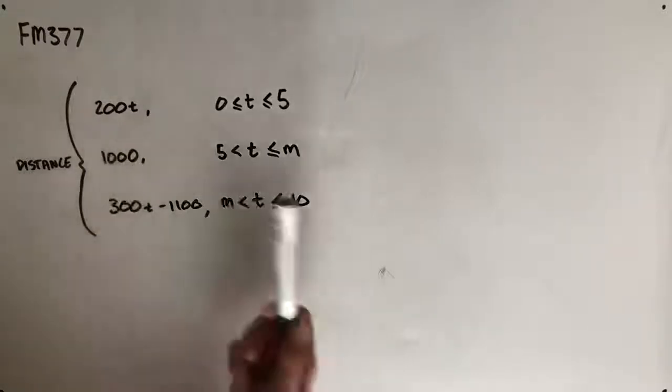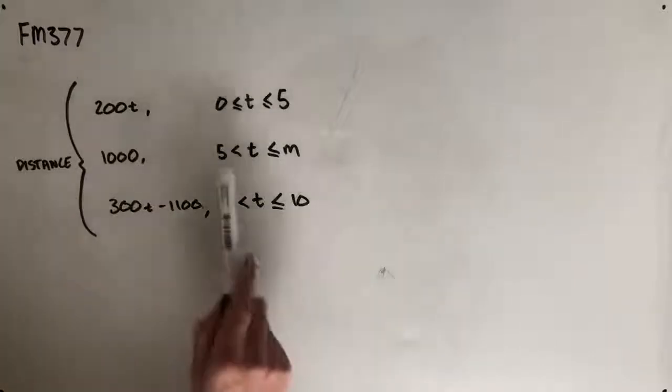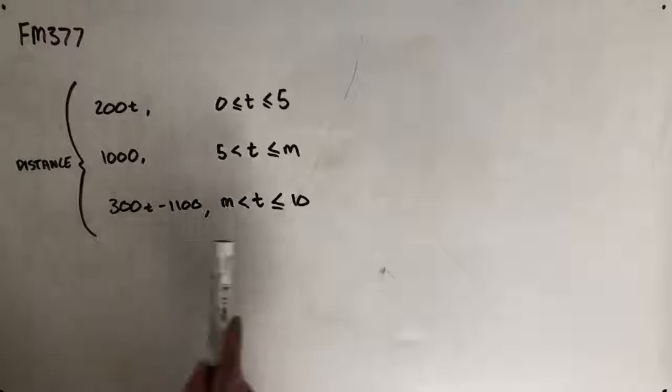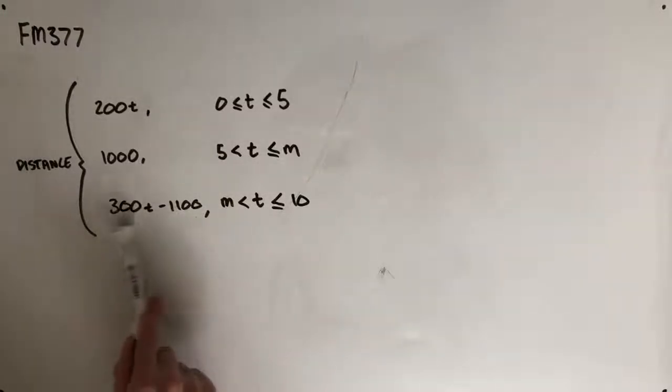And she stays at that distance, so what we're going to presume here is that she takes a break between 5 minutes and m minutes. We also know that after this, she's traveling a bit faster, so she's traveling 300 meters per minute to make it to the pool on time.